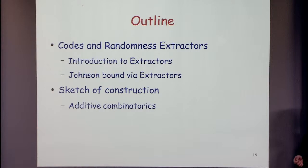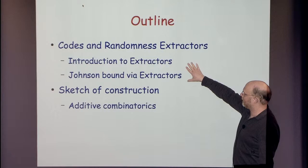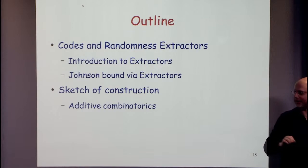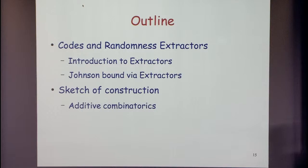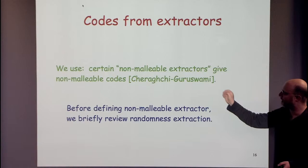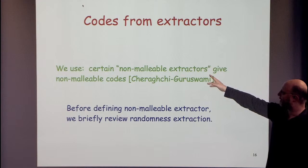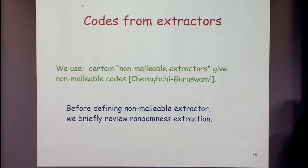In the remaining time, I want to first talk about codes and randomness extractors — this won't have anything to do with non-malleable codes, so even if you don't care about them, you may care about this. Then I'll sketch the construction, and give one slide introducing additive combinatorics. We're going to use a connection discovered by Mahdi and Venkat, that certain non-malleable extractors give non-malleable codes. First let me review randomness extraction.